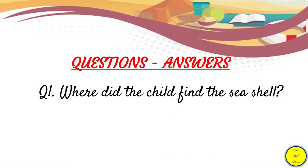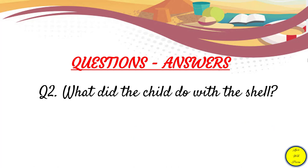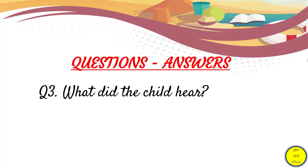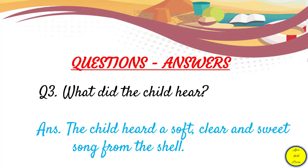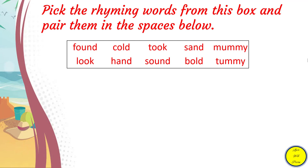Let us discuss the questions and answers of the poem. The first question is: where did the child find the sea shell? The answer is: the child found the sea shell lying on the sand. The next question is: what did the child do with the shell? The answer is: the child picked up the shell and took it home. The third question is: what did the child hear? The answer is: the child heard a soft, clear, and sweet song from the shell.